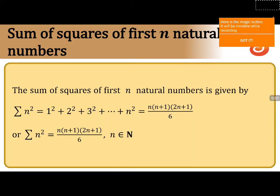This is the sum of squares of the first n natural numbers, that means sigma n squared — 1 squared plus 2 squared plus 3 squared, added up to n squared. The formula is n into n plus 1 into 2n plus 1, divided by 6.